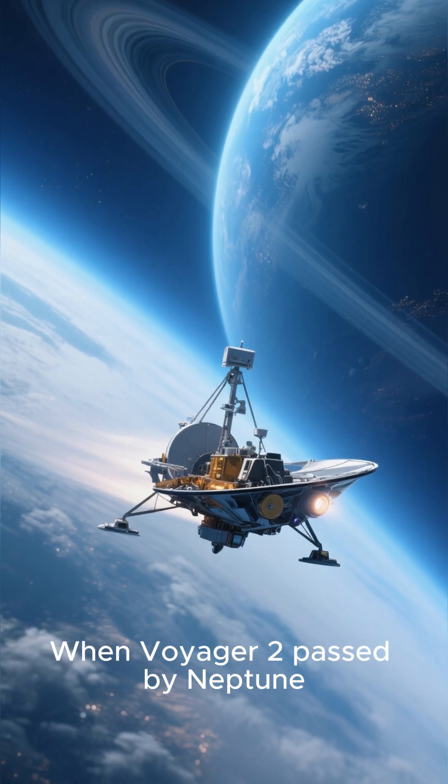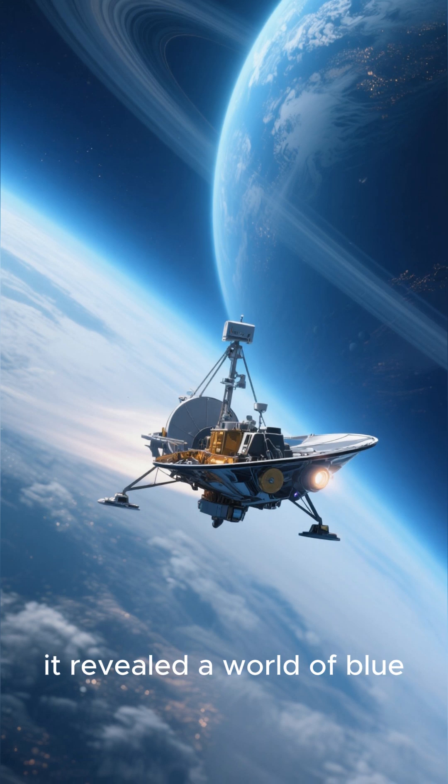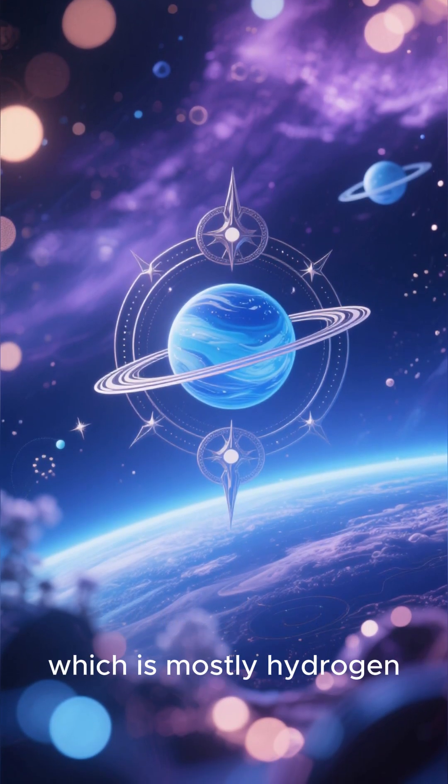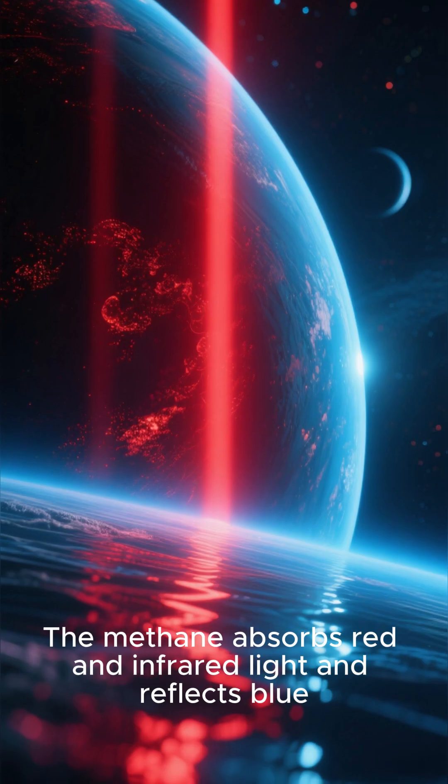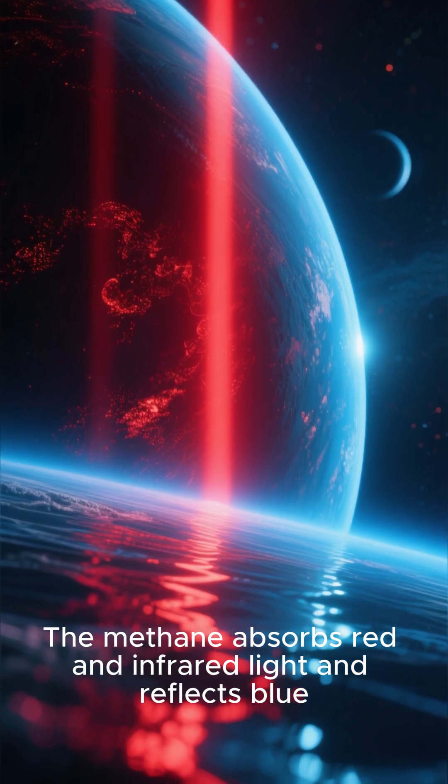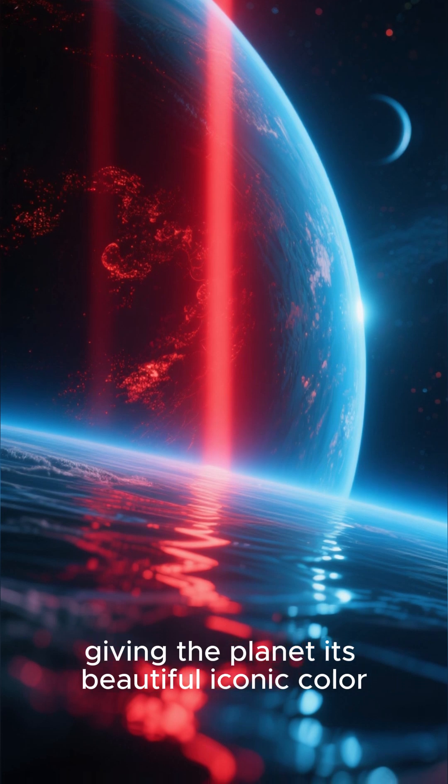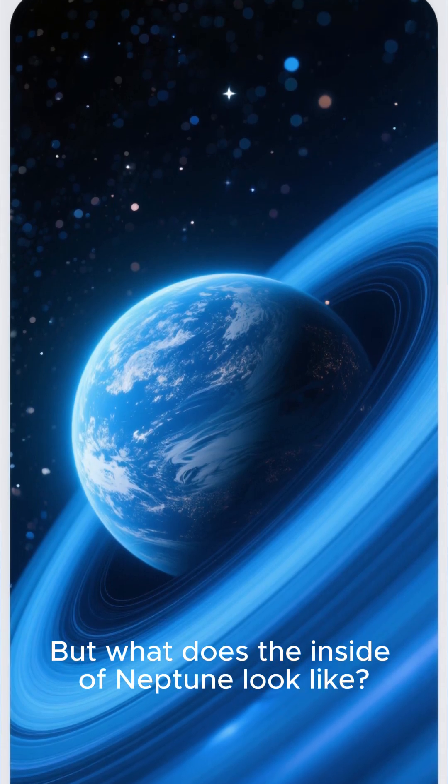When Voyager 2 passed by Neptune in 1989, it revealed a world of blue. The deep blue color comes from the planet's atmosphere, which is mostly hydrogen, helium, and methane. The methane absorbs red and infrared light and reflects blue, giving the planet its beautiful, iconic color. But what does the inside of Neptune look like?